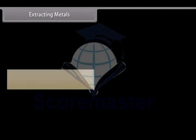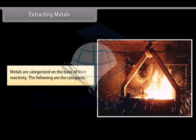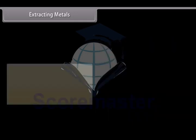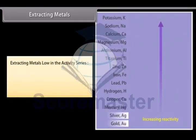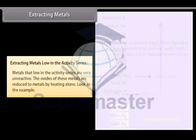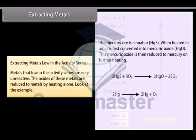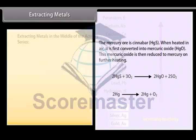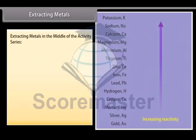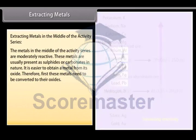Extracting Metals. After the metals are separate from their ores, they are classified based on their reactivity. The following are the various categories of metals grouped as per their reactivity. Extracting Metals Low in the Activity Series. Metals that low in the activity series are very unreactive. The oxides of these metals are reduced to metals by heating alone.